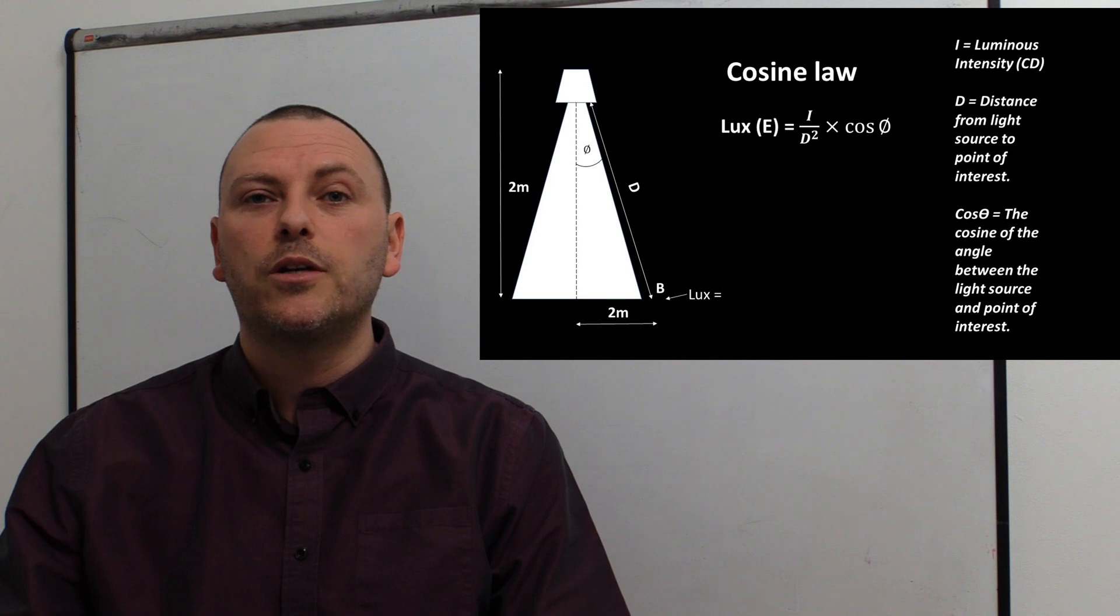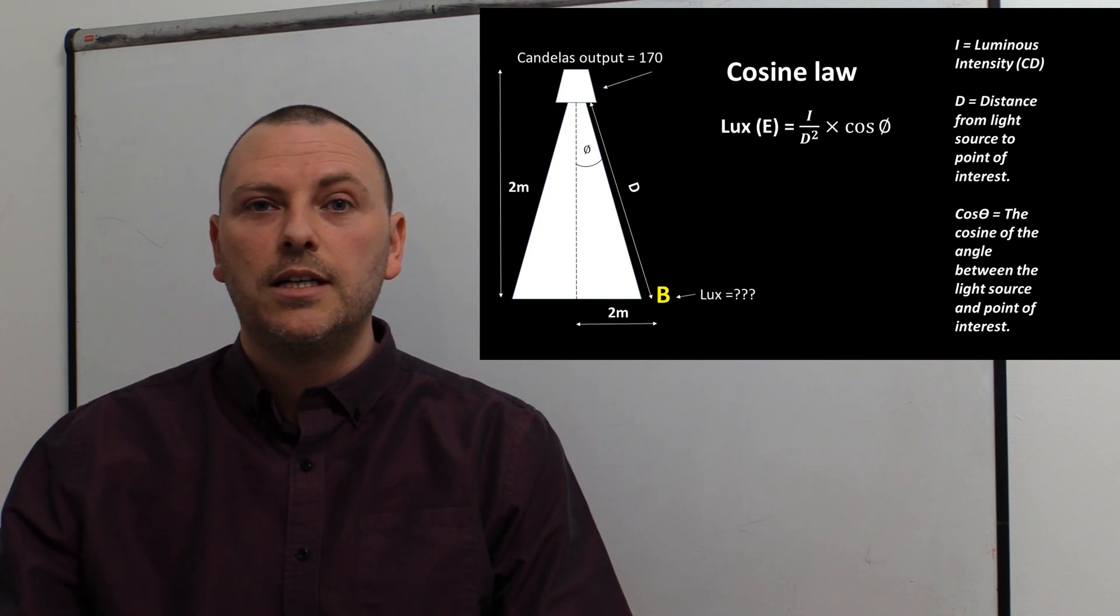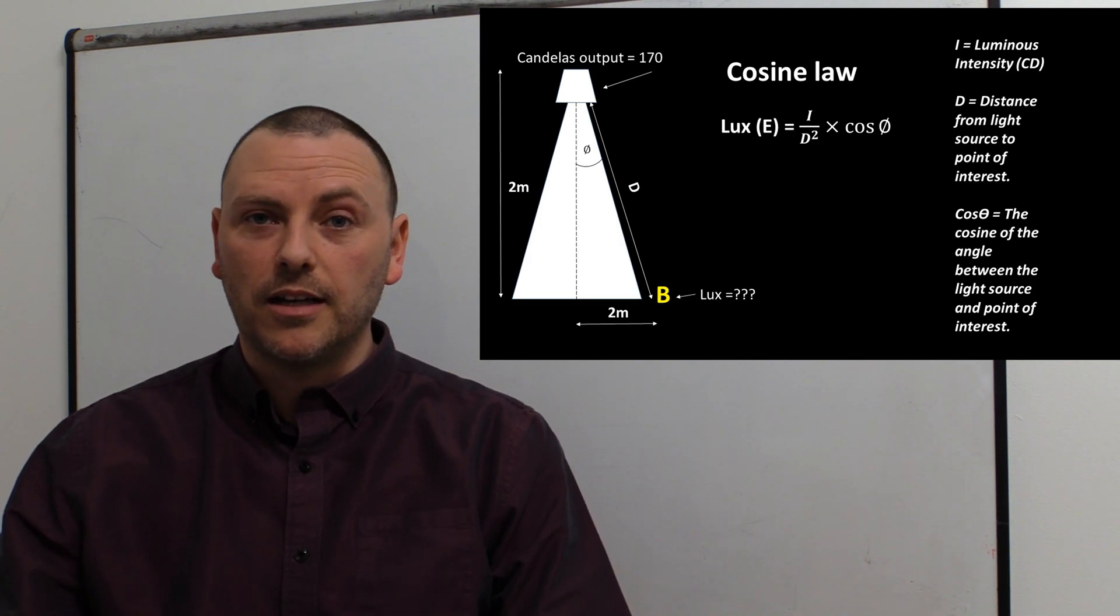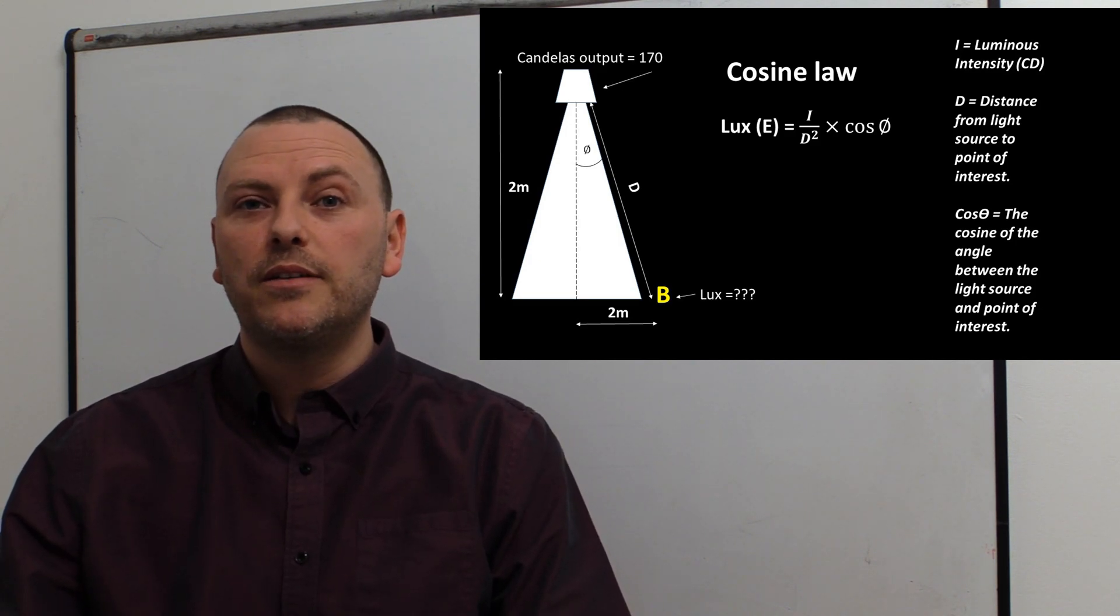This is the kind of setup we're looking at where we're trying to work out the lux levels at a point. You can see it's slightly different - our distance d is actually at an angle now, so we're going to have to use Pythagoras and we also need to know the cosine of that angle.